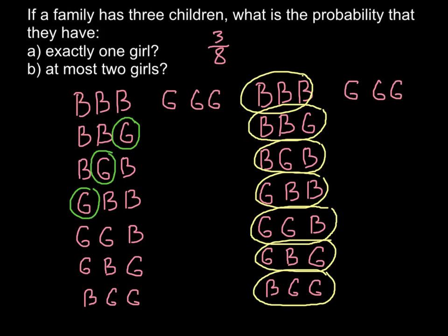So the answer for the second question would be seven out of eight would meet the requirements of this question. Seven out of eight possibilities exist that this family would have a maximum of two girls.